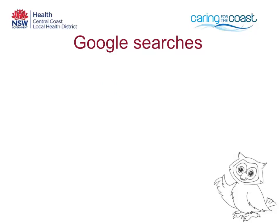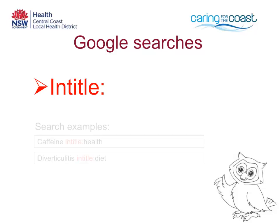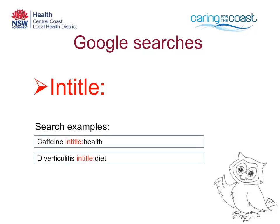One final tip is to use intitle colon before your search term in Google, which enables you to find websites that have that word in the title of the webpage. For example, caffeine intitle:health will find websites about caffeine that have health in the title.